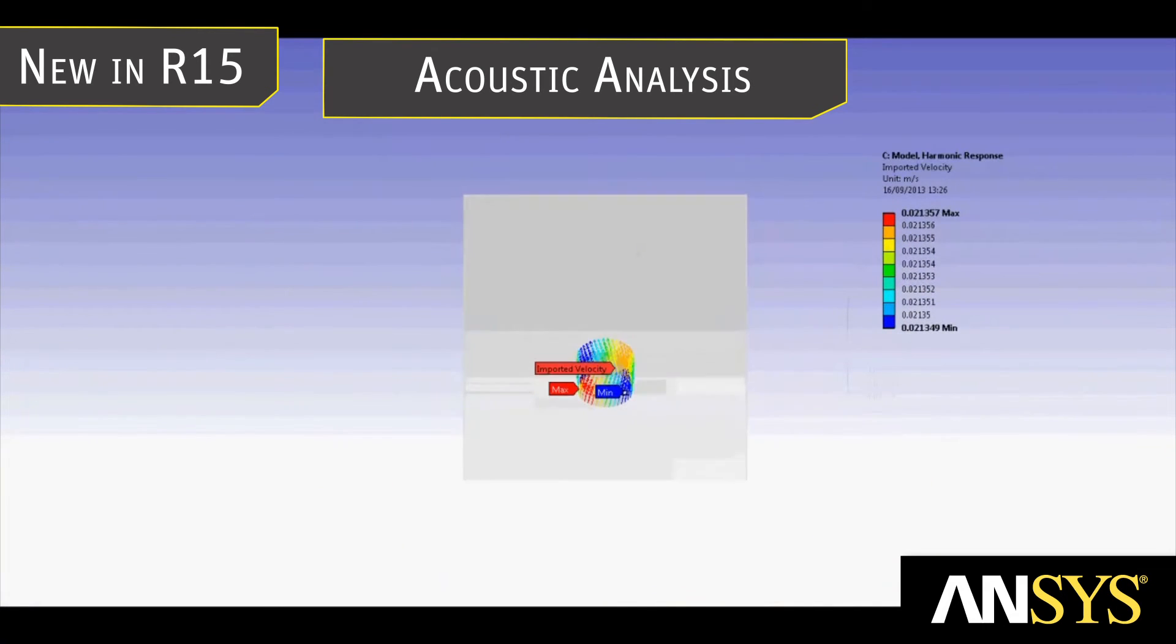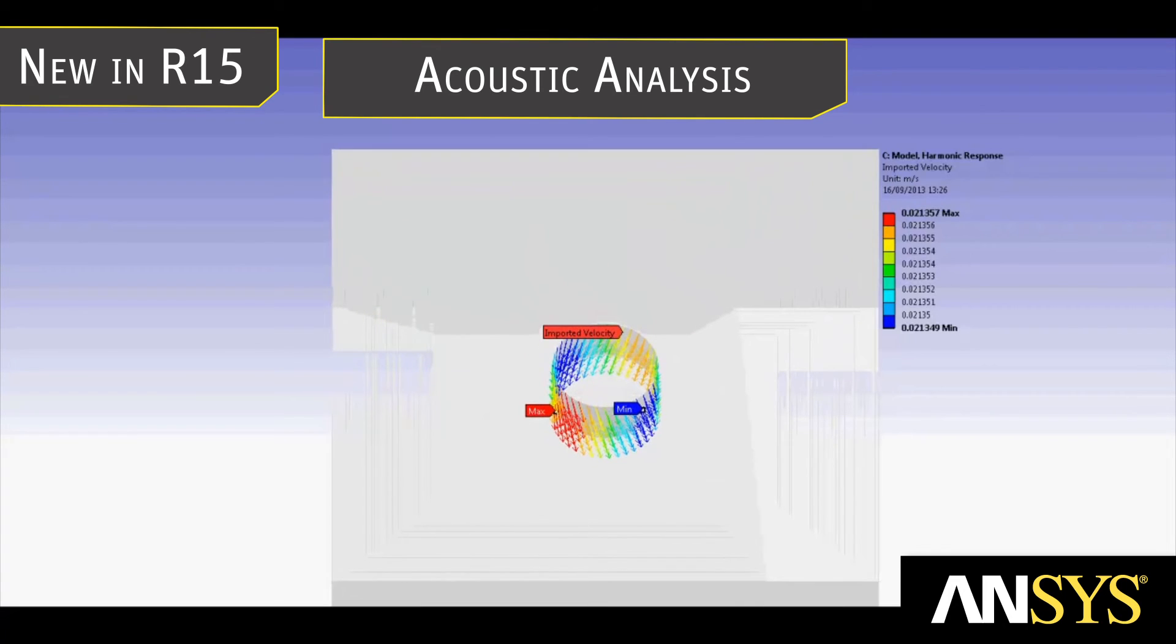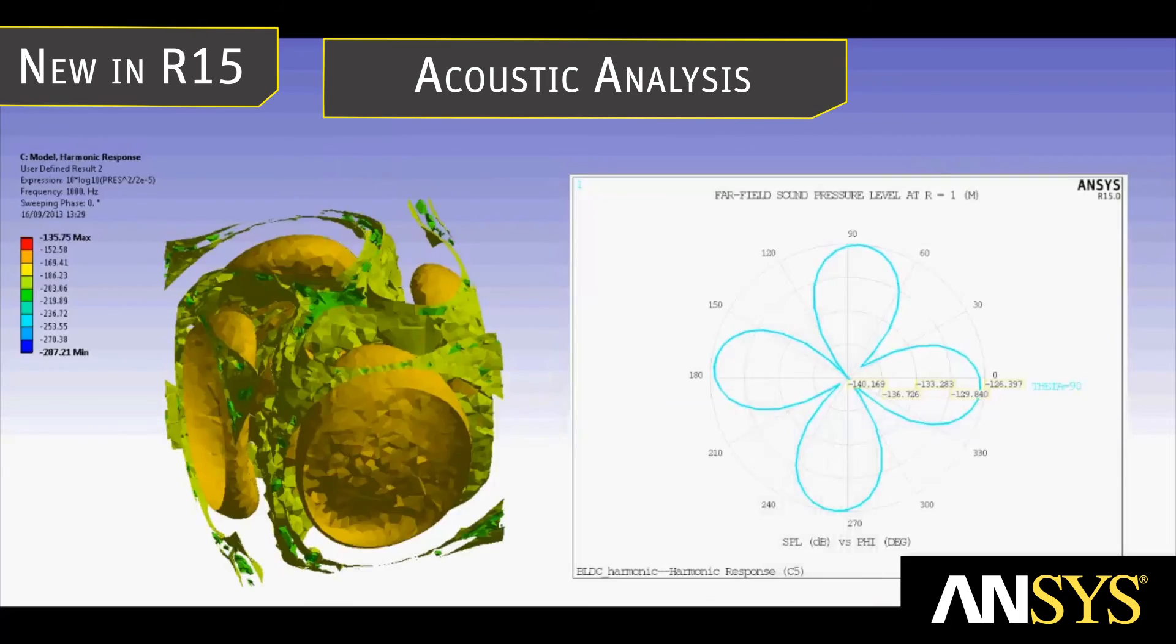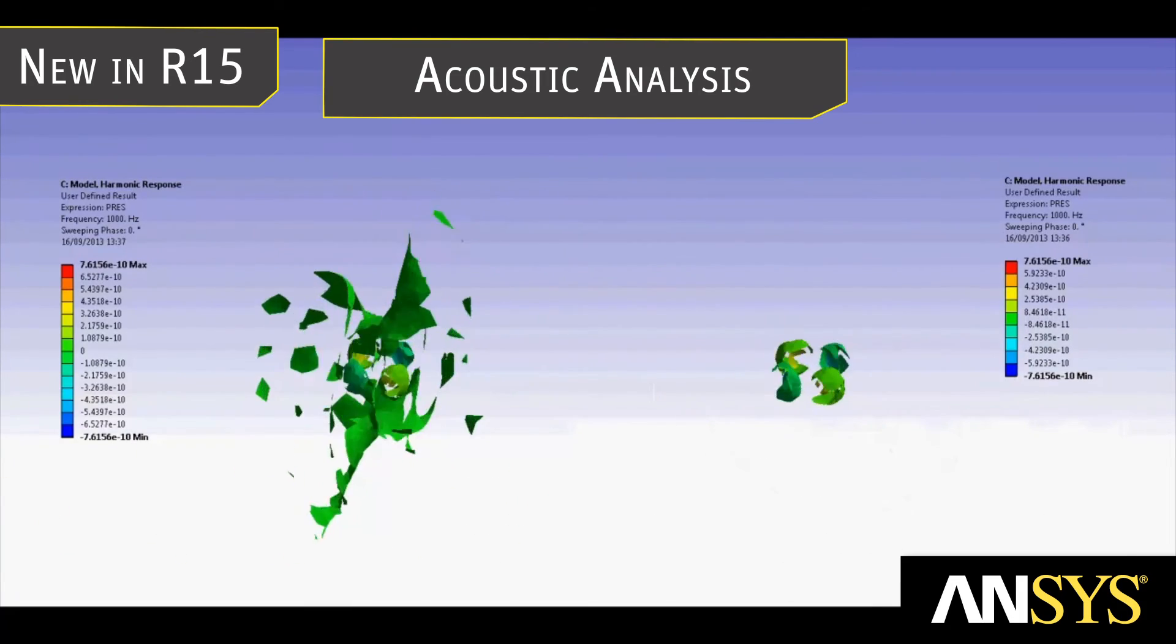Deformation velocities are used in the vibroacoustic analysis. Pressure fields and radiated far-field sound pressure levels are predicted, allowing the engineers to take measures to control generated noise of the machine.